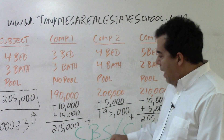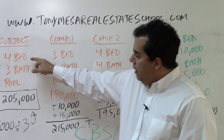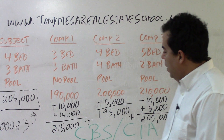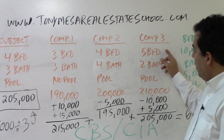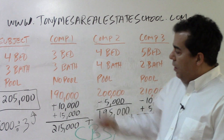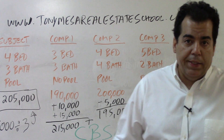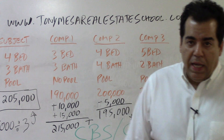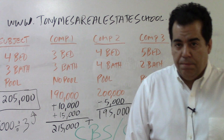Conceptually, if the comp is inferior and has one bedroom less than the subject, you add to the comp to bring it up to the level of the subject. If the comp is better and has a bedroom more, you subtract to bring it down to the level of the subject. You always add or subtract from the comparable sale, never from the subject. Remember CBS and CIA — have a great day, and remember TonyMesaRealEstateSchool.com.